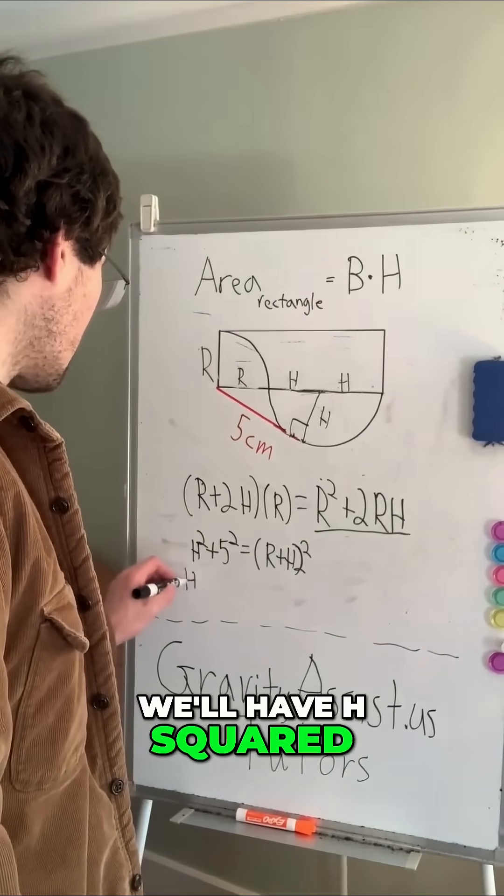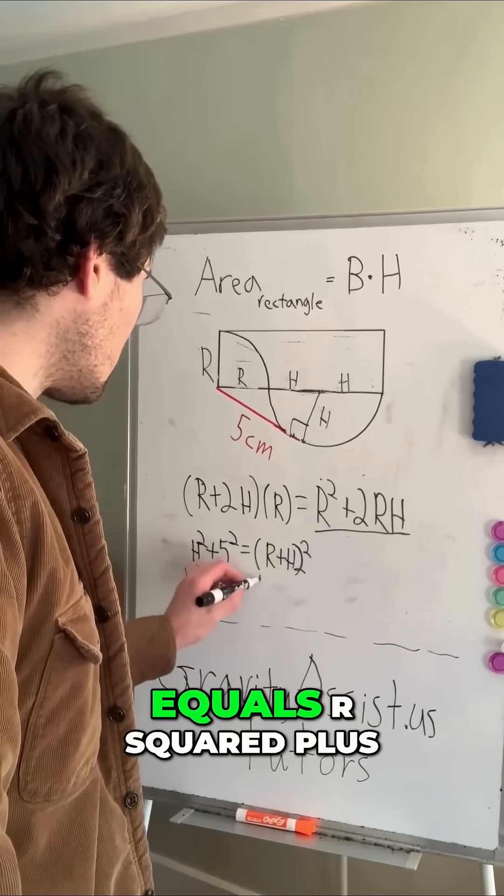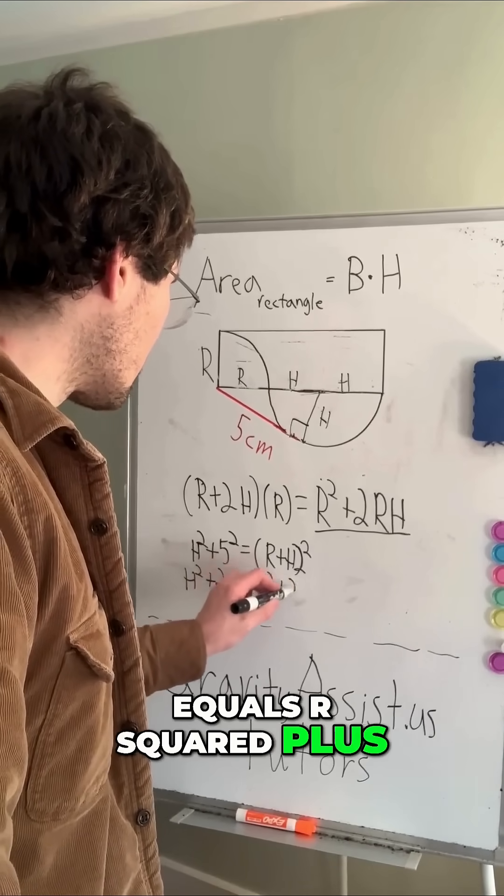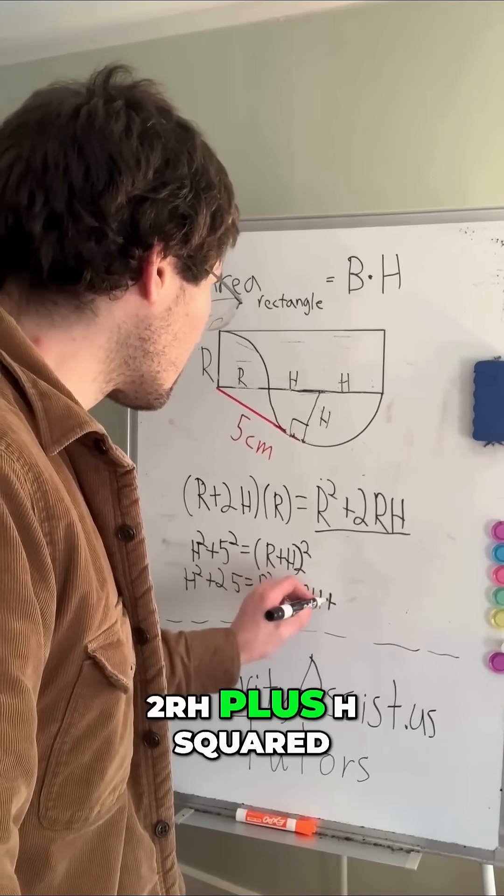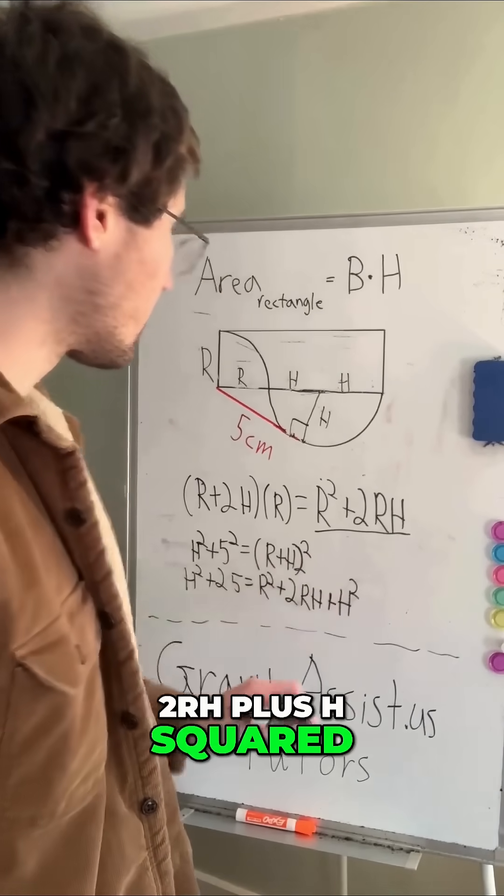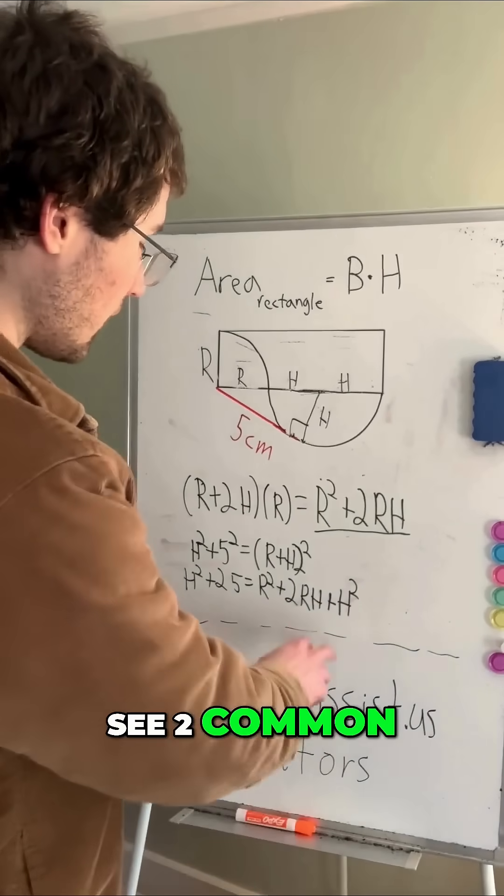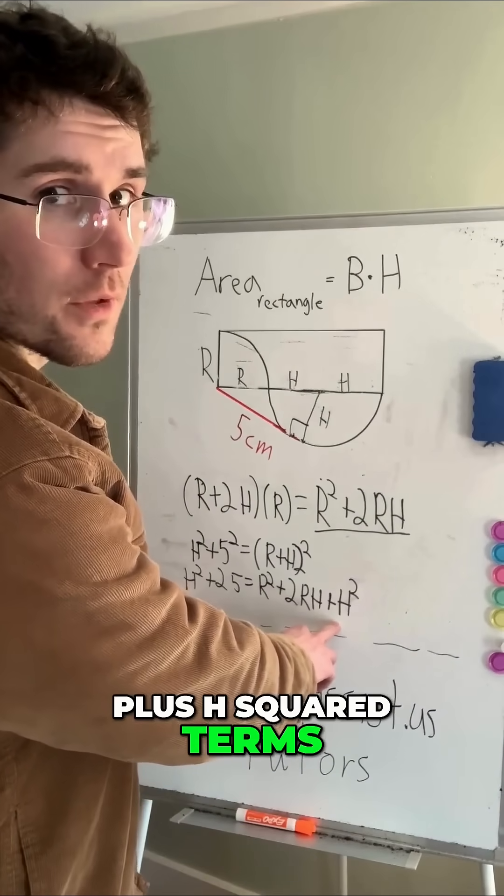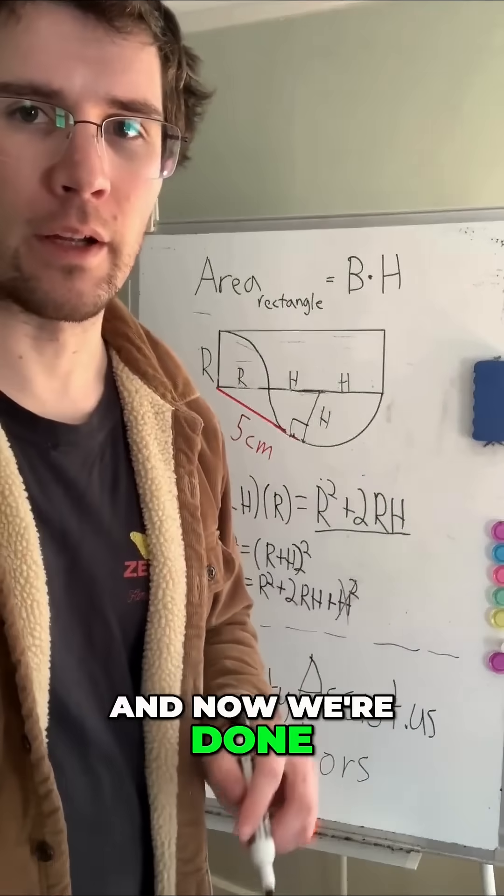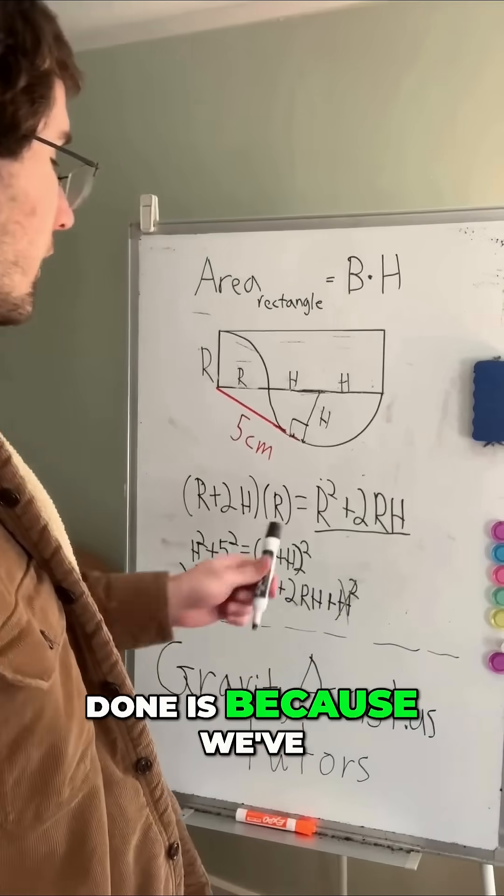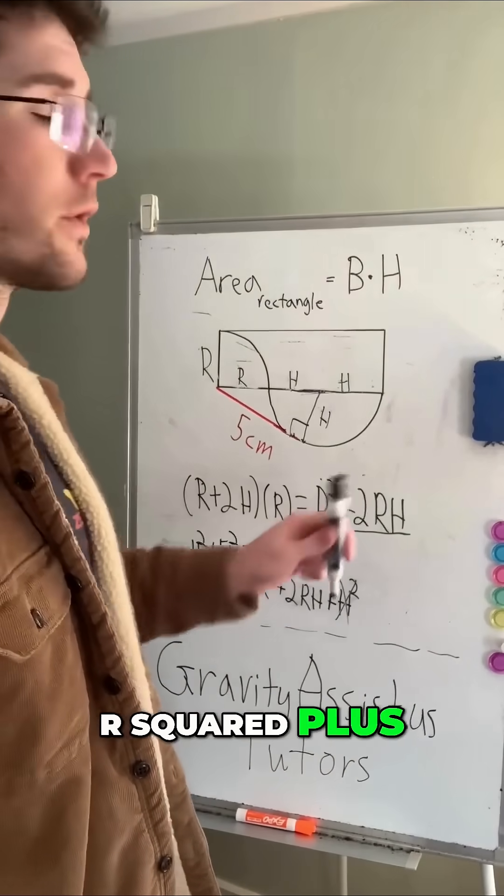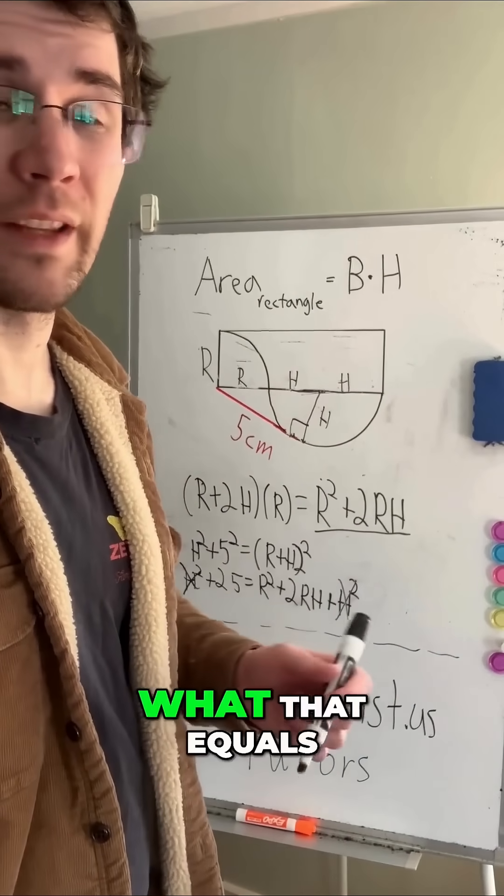We'll have h squared plus 25 equals r squared plus 2rh plus h squared. Now I can see two common h squared terms. Let's cancel those out. And we're done. The reason we're done is because we've just found out what r squared plus 2rh equals. It equals 25, and we're done.